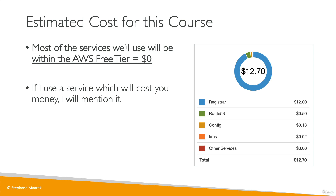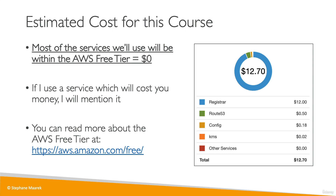For example, the most expensive item in my cost breakdown is the domain registrar, because I purchased a domain name — a URL like stefanccp.com. You can read more about AWS free tier at the provided URL if you're unsure whether something will cost you money. You can also come back to this slide to check, based on the service you're watching, if it's going to cost anything. Most of the services we'll be using will be within the free tier, so don't worry — I'll be guiding you all along the way. I am super happy that you're here with me in this course, and I wish you happy learning!